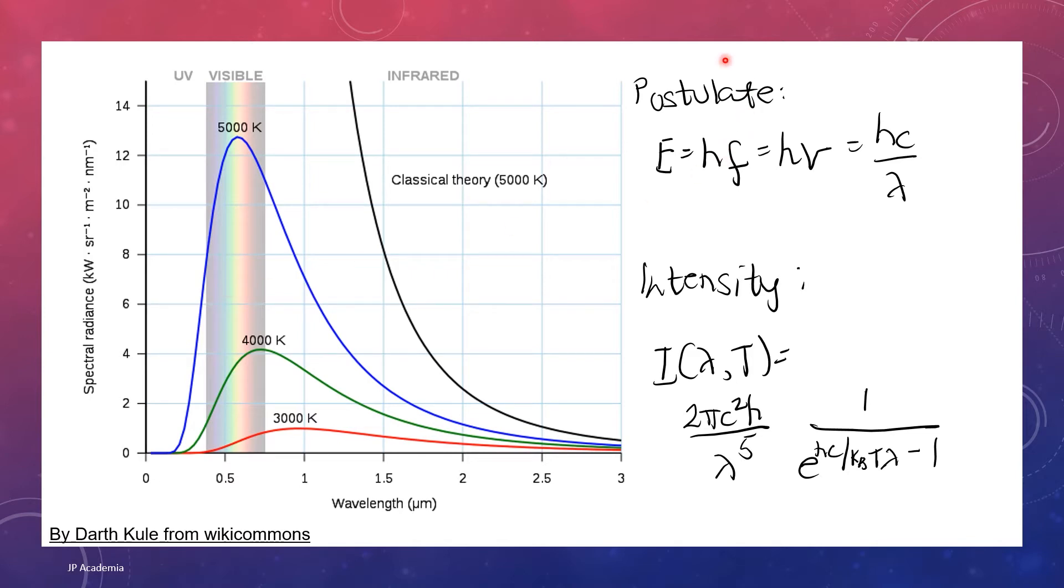Max Planck was able to do the theoretical framework of this experimental data using an assumption that for a radiation with frequency f and wavelength lambda, it is emitted only in discrete packets called photons. And this is the postulate of Planck. The energy of your photon is equal to hf, where h is your Planck's constant, f is the frequency. We can rewrite frequency in terms of nu. Or this is equal to hc over lambda. In terms of intensity for the black body radiation, this is expressed using this equation.